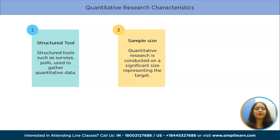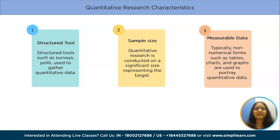The second characteristic is sample size. Quantitative research is conducted on a significant sample size that represents the target market. Sampling methods have to be used when deriving the sample to fortify the research objective. Measurable data is typically represented in non-numerical forms such as tables, charts and graphs to portray quantitative data, making it simple to comprehend the information gathered and to demonstrate the reliability of the market research.